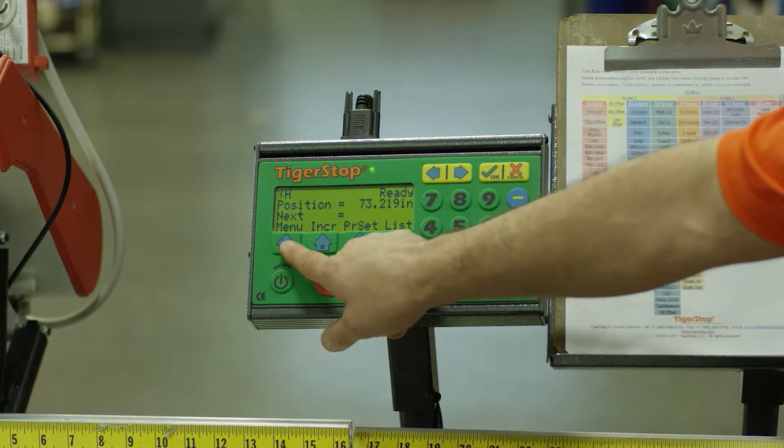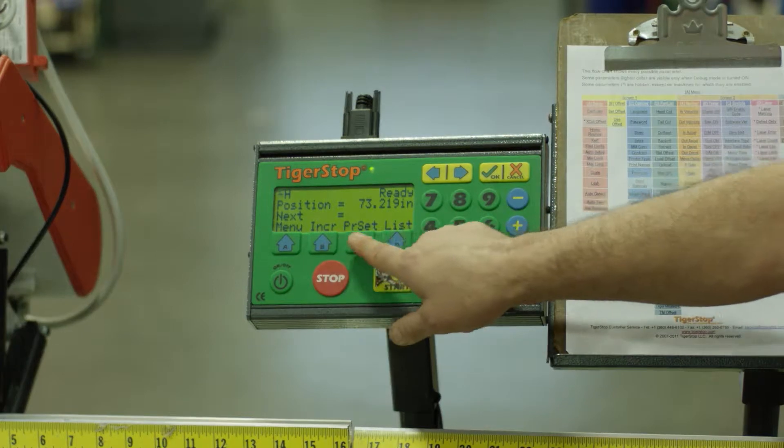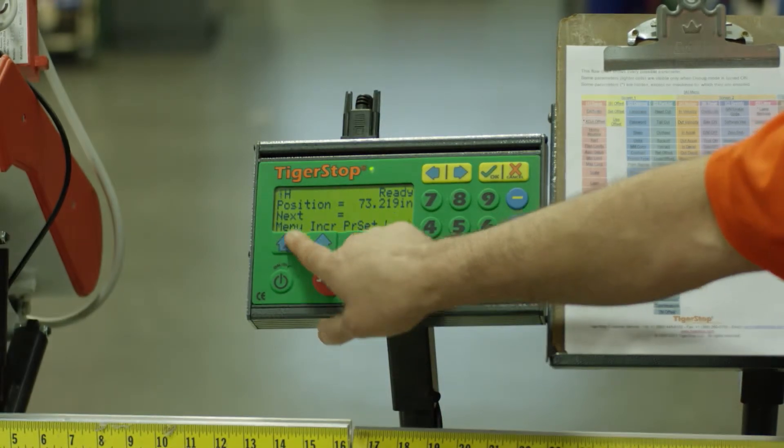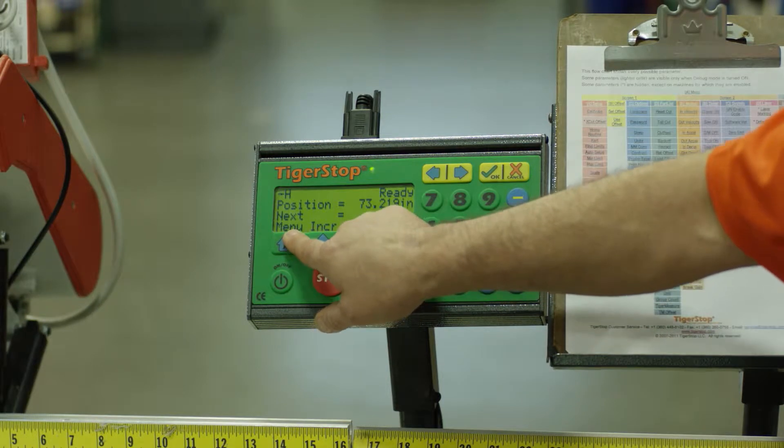At this point, you're going to see menu, increment, preset, or list. We're going to focus on menu. Press A, the button corresponding to menu. When you've pressed menu, it will now ask you for the password.